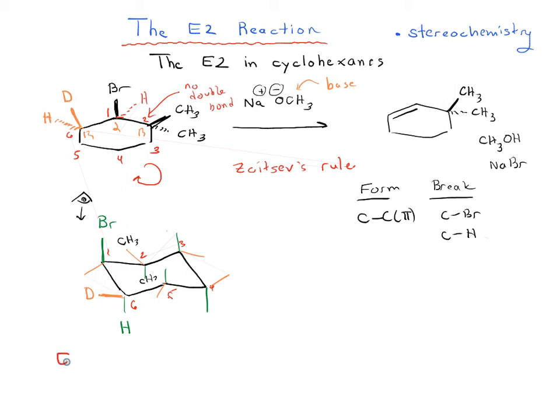So when we're going to do this elimination reaction, remember in the E2, the hydrogen is anti-periplanar to the leaving group. And we have our bromine here. It's pointing straight up. And that means that we would have to remove whatever is pointing straight down. And in this case, straight up bromine, straight down is this green hydrogen. So we would therefore have to remove this green hydrogen.